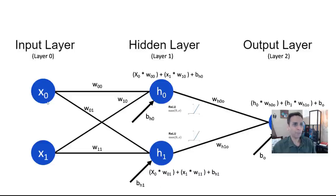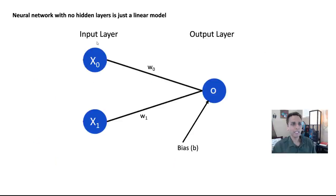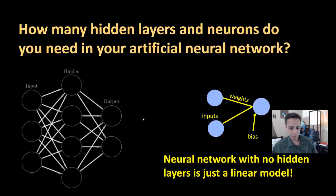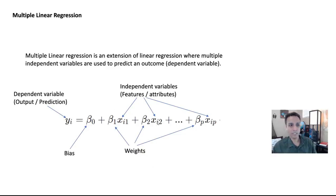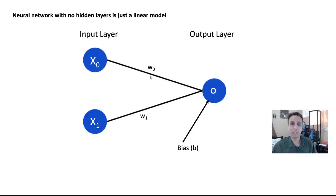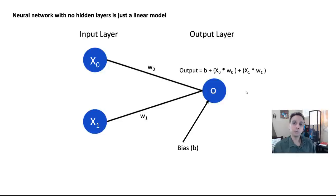If we remove the hidden layer, we just have input and output. So you have two inputs, an output, and weights W0 and W1 for each input — exactly the same as x1, x2 with beta1, beta2. In addition, we have a bias. The output is defined as: bias plus X0 times W0 plus X1 times W1. This neuron goes through an activation function like ReLU, but in the output layer you don't apply an activation — the default is linear activation, meaning input equals output.